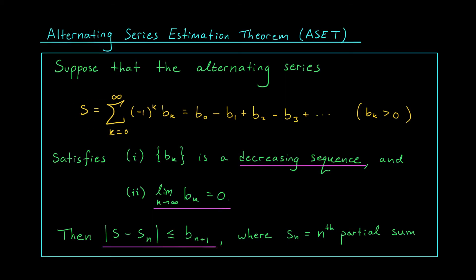The estimation theorem is based on our reasoning from the last slide, and gives us an upper bound on the error that we get by approximating the true sum with the nth partial sum. It says that the magnitude of the error is no more than bn plus 1, the first term in our positive sequence that's not included when we make this approximation. Let's see how the estimation theorem can be used in an example.